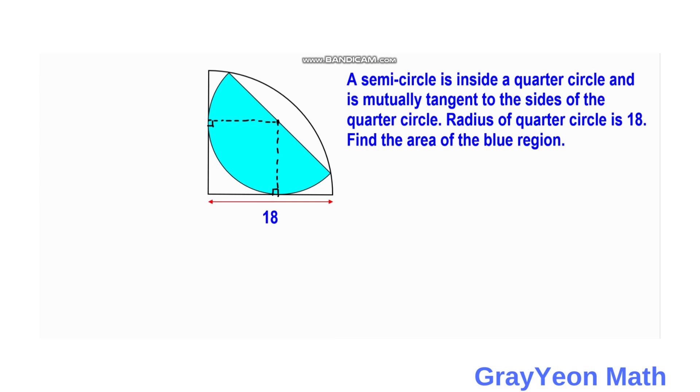So next is we label the radius of this semicircle as R. And this is R also. And this is R also. And also this is R.